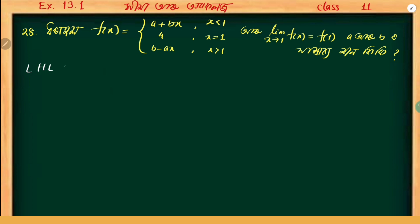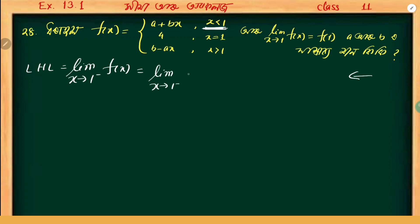We calculate the left-hand limit. Left-hand limit as x tends to 1 minus: since x is less than 1, f(x) equals ax + bx. Substituting x tends to 1, we get a plus b into 1, that means left-hand limit equals a plus b.